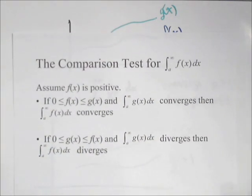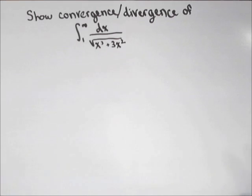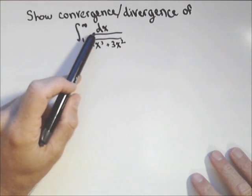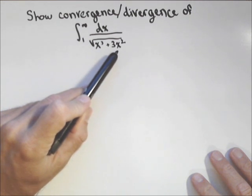Now, let's go ahead and run an example and see how we use this. So, we're going to try and show the convergence or divergence of the integral of one to infinity of dx over square root of x cubed plus three x squared.